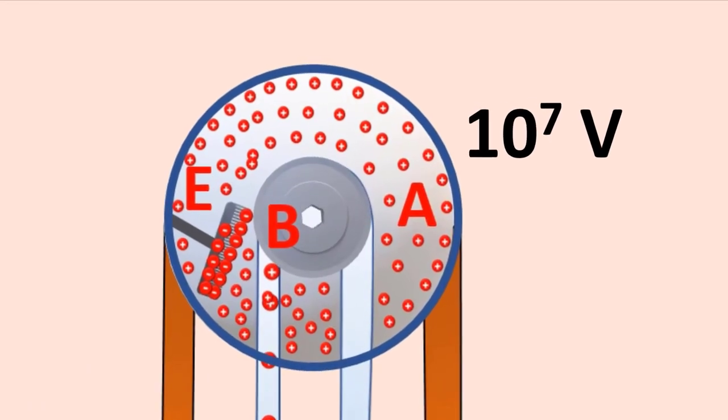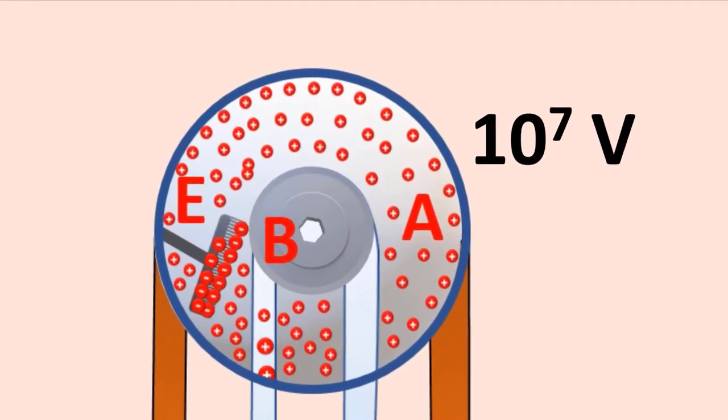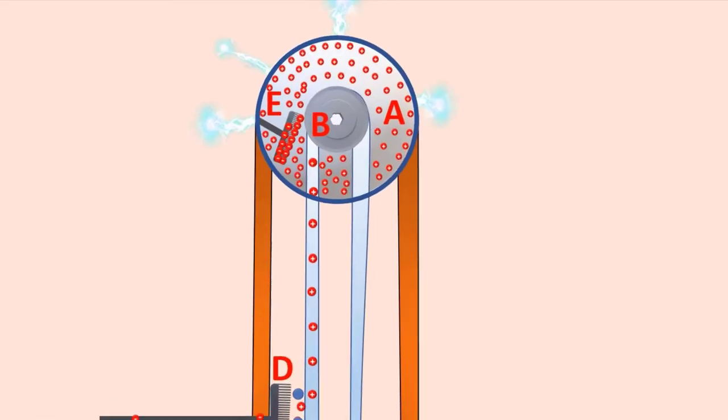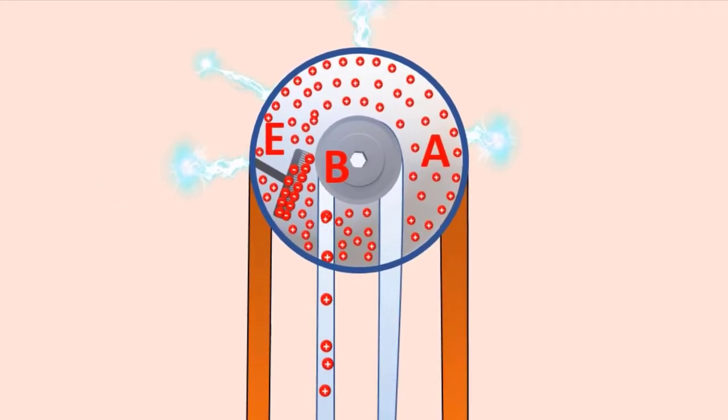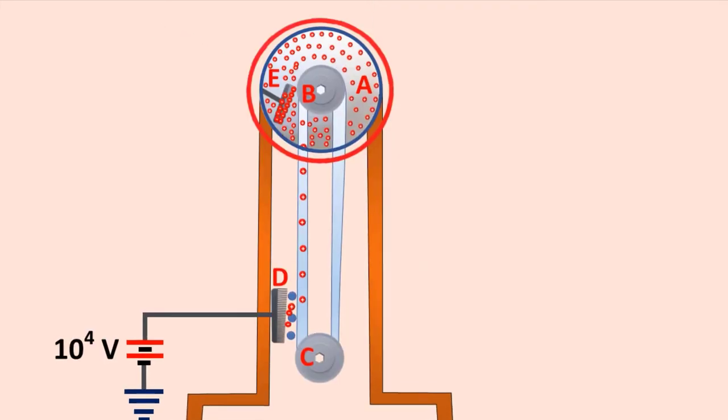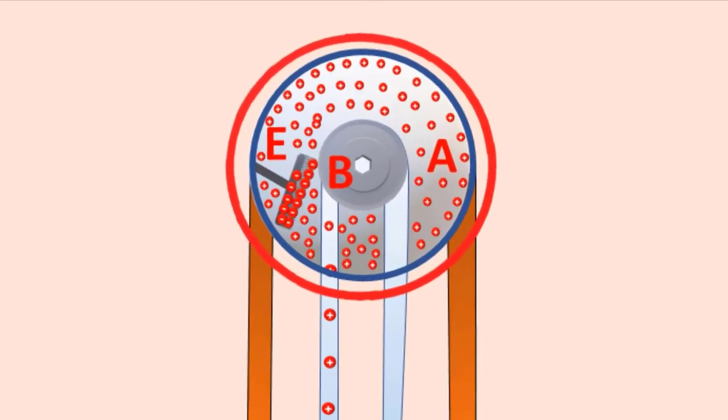We cannot store charges beyond this limit, since the extra charges start leaking to the surroundings due to the ionization of air. The leakage of charges can be reduced by enclosing the machine in a gas-filled steel chamber at very high pressure.